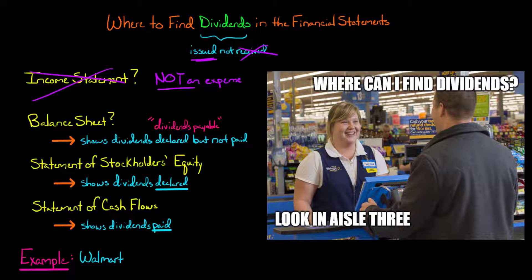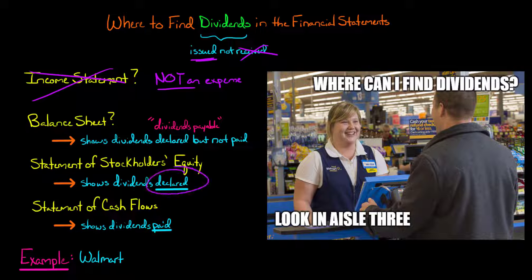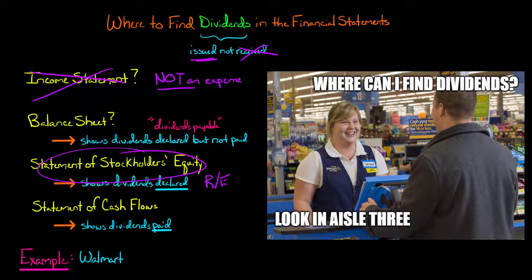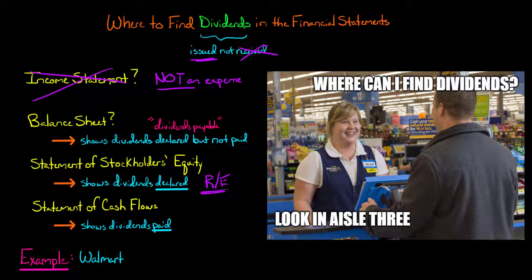Once the board of directors declares a dividend, the company now has a liability because it owes dividends to its shareholders. So if those dividends have not yet been paid but have been declared, the company would have a liability called dividends payable on its balance sheet. The statement of stockholders' equity will show any dividends declared by the company's board of directors during the period, because those dividends affect the company's retained earnings account.